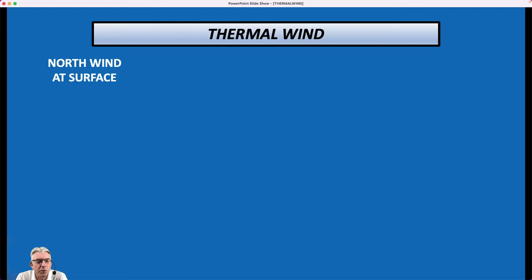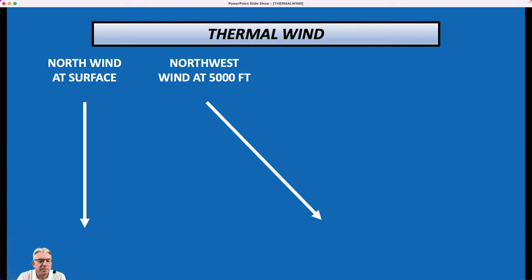Now, there's an arrow denoting that. At 5,000 feet, about a mile up, let's say that we've got a northwest wind, and we're going to denote that by that arrow there. And so the thermal wind is the vector difference between those two vectors.